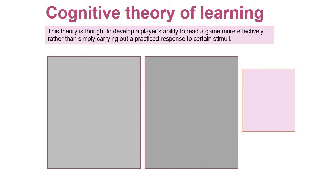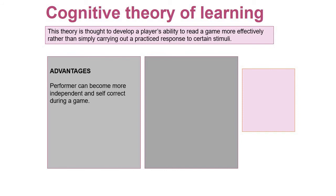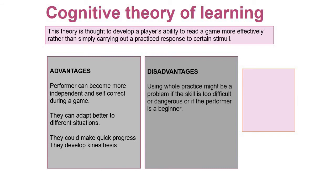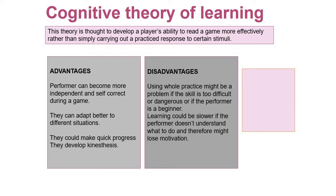This theory is thought to develop a player's ability to read a game more effectively rather than simply carrying out a practice response to certain stimuli, giving more in-depth reasoning behind why you are doing certain things. Advantages: a performer can become more independent and self-correct during a game, not just relying on the coach; they can adapt better to different situations; they can make quick progress; and kinesthesis - that feeling of performing and doing it right - can be developed. Disadvantages: using whole practice might be a problem if the skill is too difficult or dangerous; learning could be slower if the performer doesn't understand; and they might not have any past experiences to draw on.